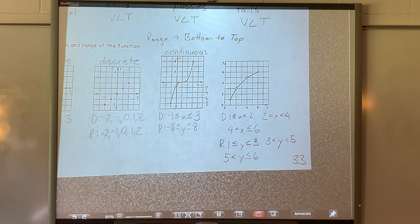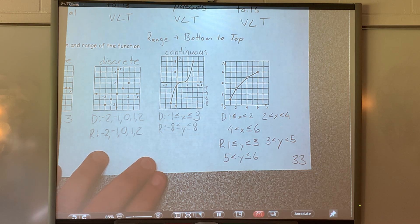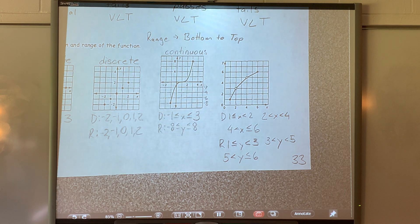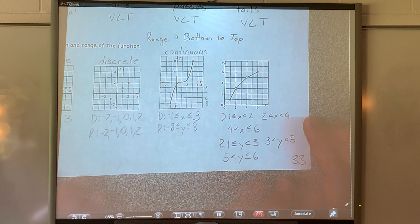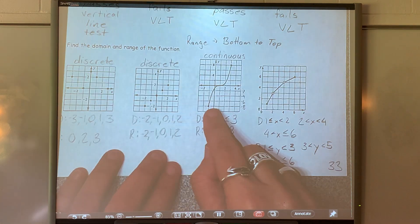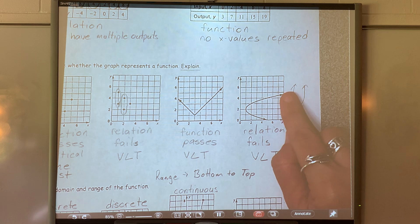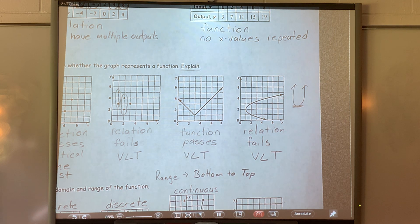They might give you that as a sentence, and it's actually easier to read that way. But if they give it as an inequality, you need to know that's what you're writing. You have to be able to read it either way. You're looking left to right for x and bottom to top for y. You really have to understand what you're looking at.